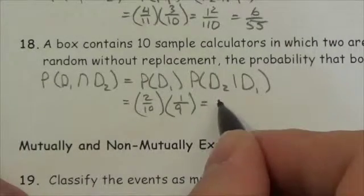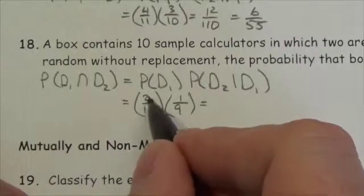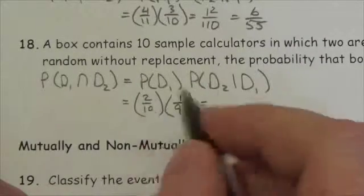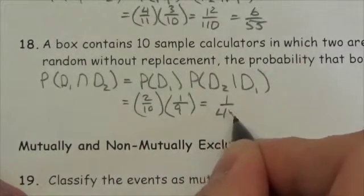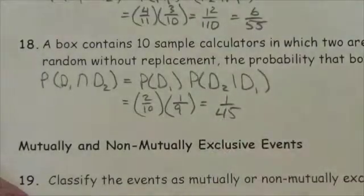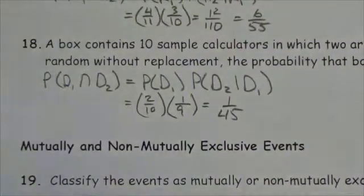And so, when we multiply that together, what do we got here? We're going to have, that's going to be 1 over 45 when we multiply those together. So there's the probability that those two are both defective.